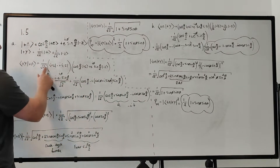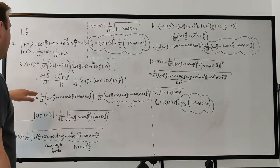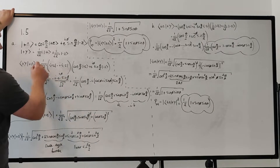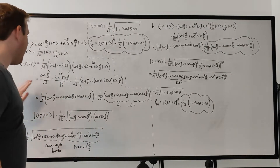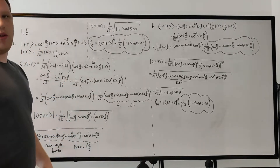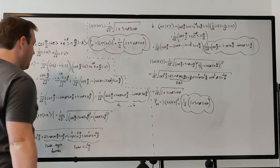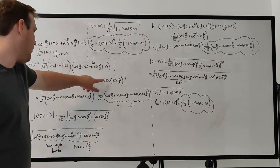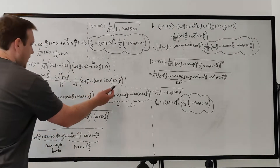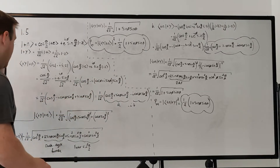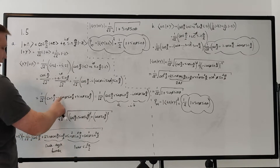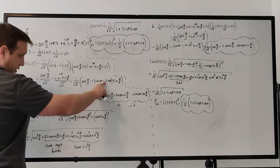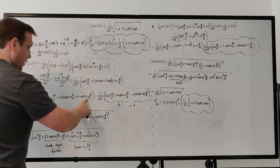Multiplying through, we get cosine(θ/2)/√2 from the first term. The inner terms cancel due to orthogonality, and the outer term gives us −i e^(iφ) sine(θ/2)/√2. Simplifying, we use Euler's formula to write e^(iφ) as cosine(φ) + i·sine(φ). Factoring out 1/2, we expand to get cosine(θ/2) minus i times (cosine(φ) + i·sine(φ)) all times sine(θ/2). Distributing gives: cosine(θ/2) − i·cosine(φ)·sine(θ/2) + sine(φ)·sine(θ/2), since −i·i = +1.